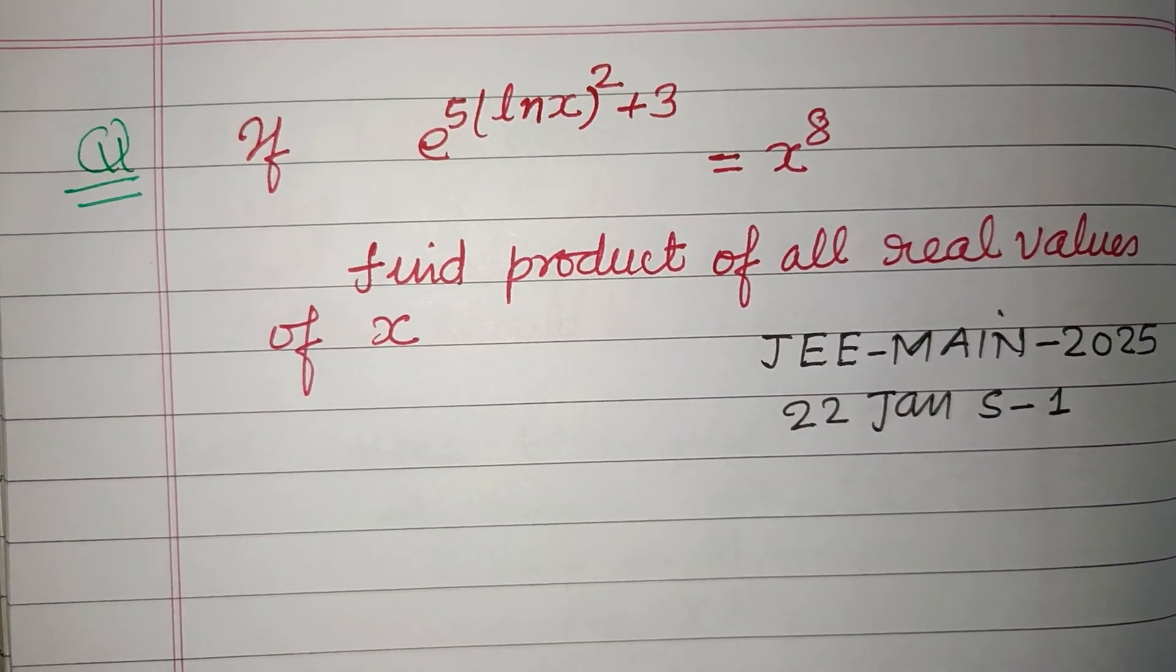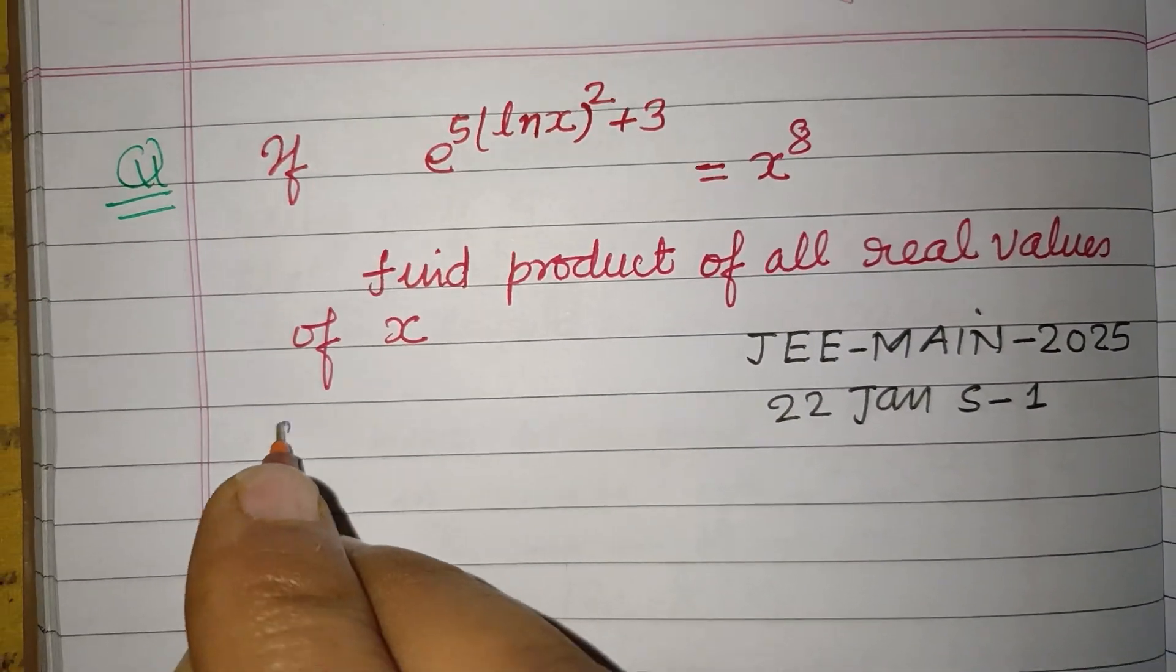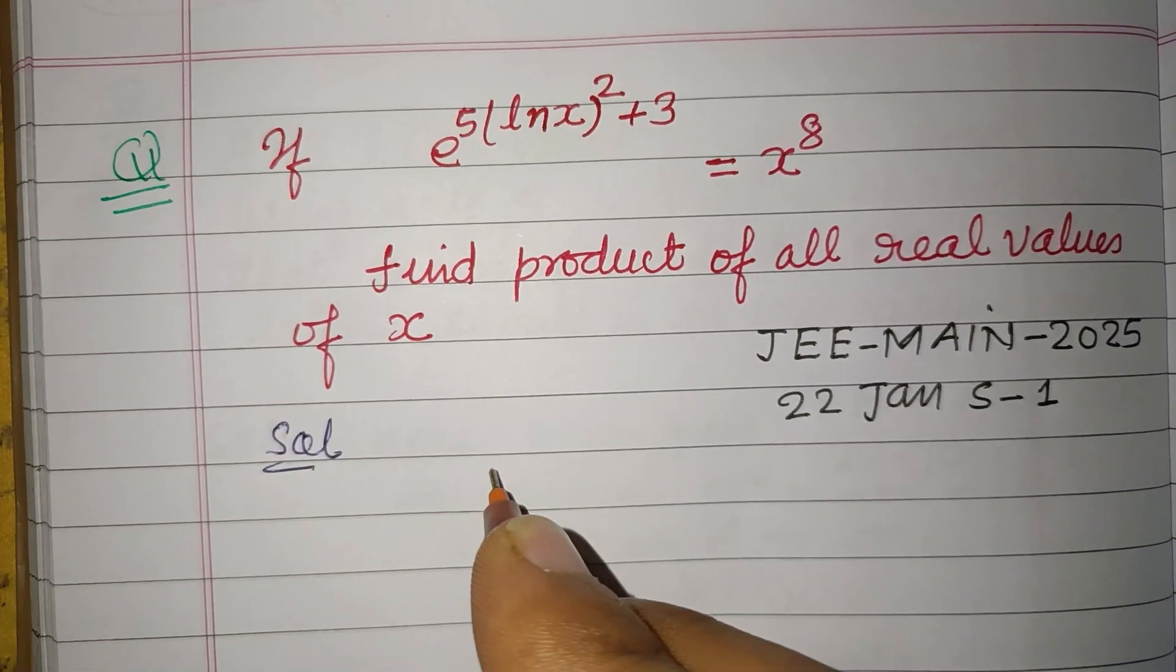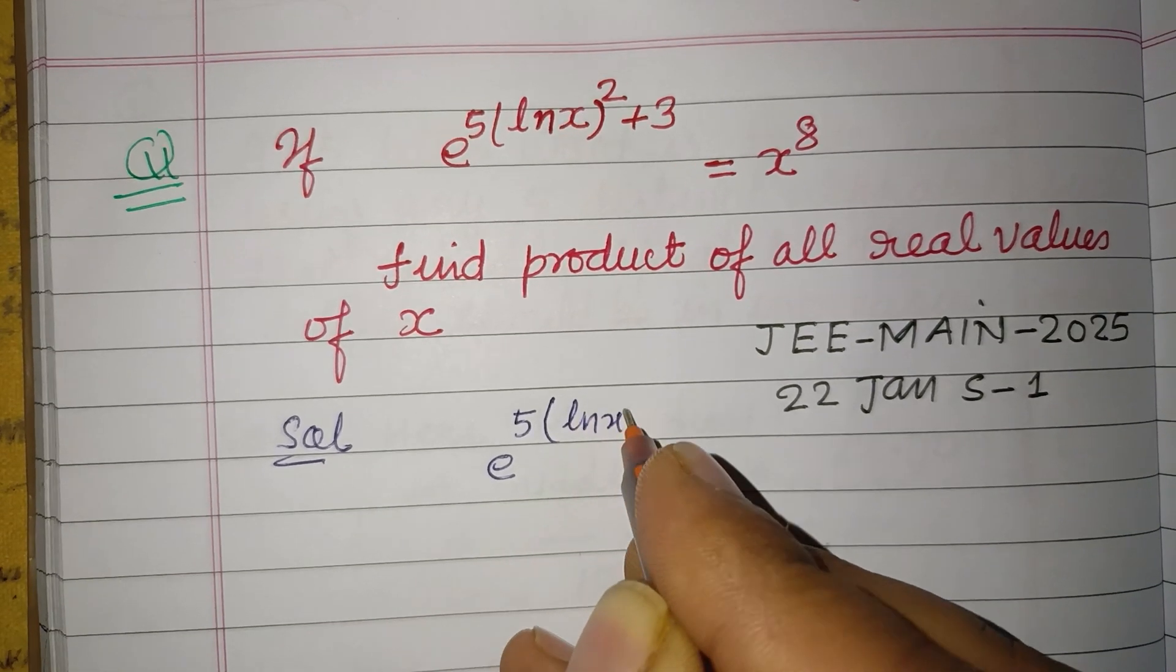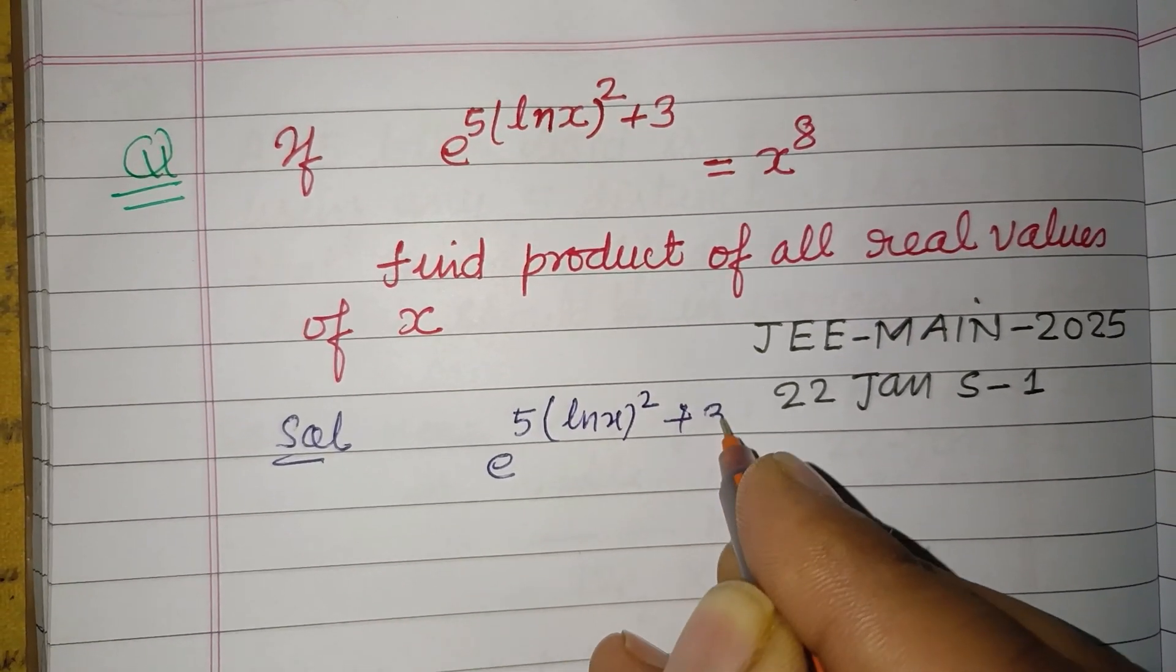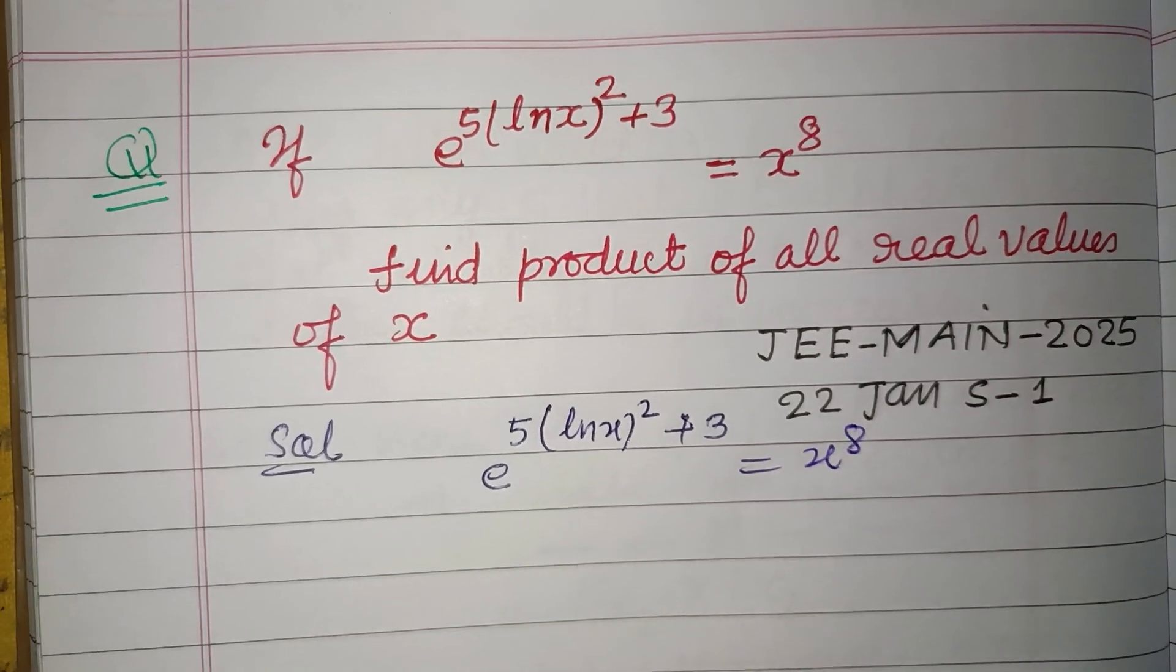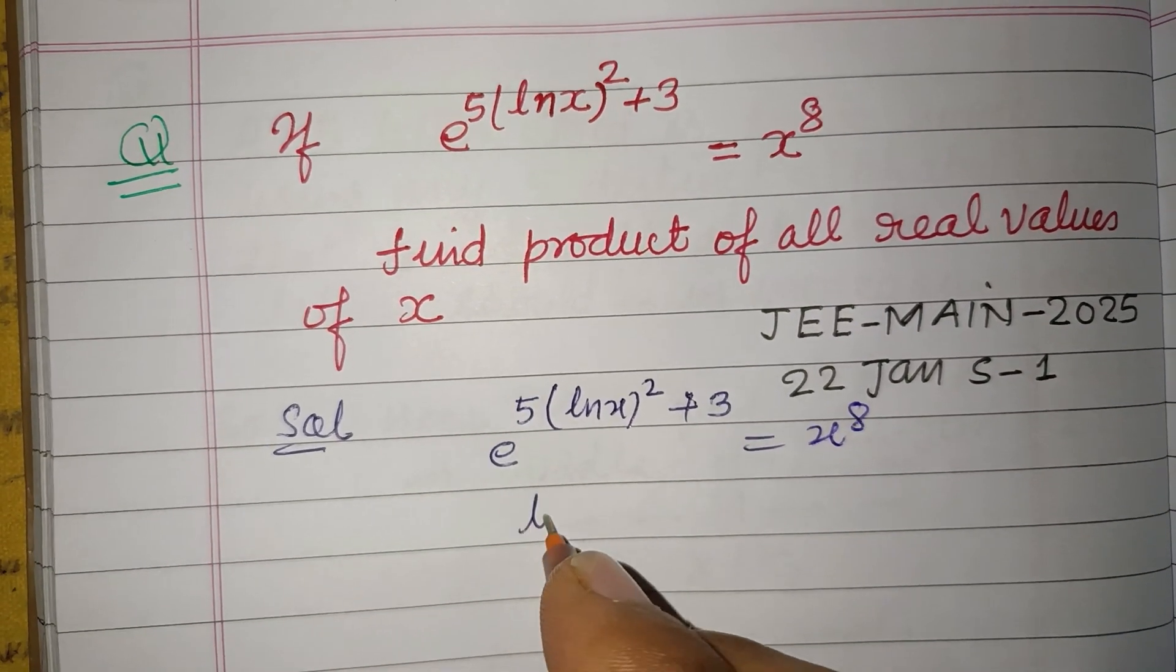So students, here we have e to the power 5 ln x squared plus 3 equal to x to the power 8. Now taking log both sides.